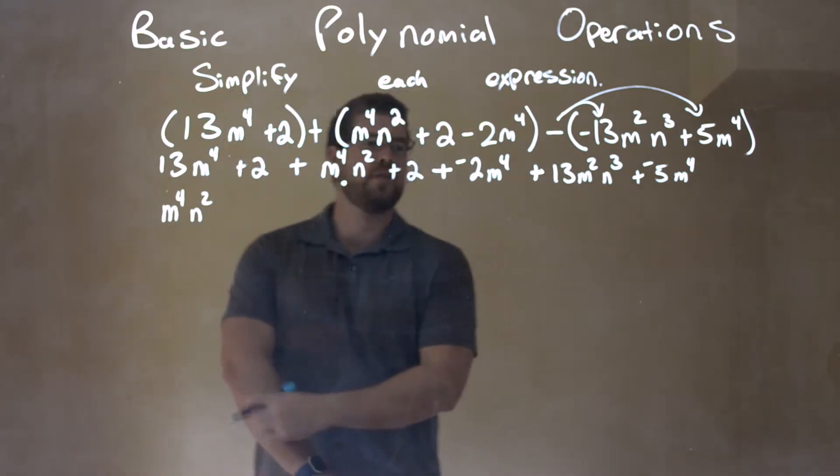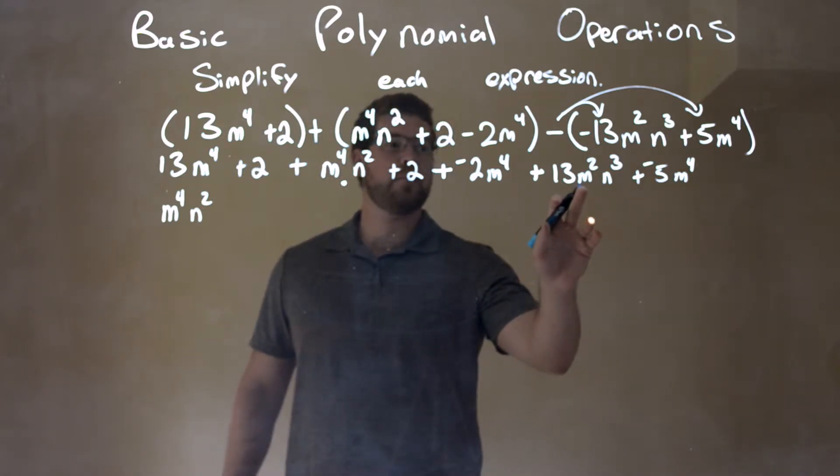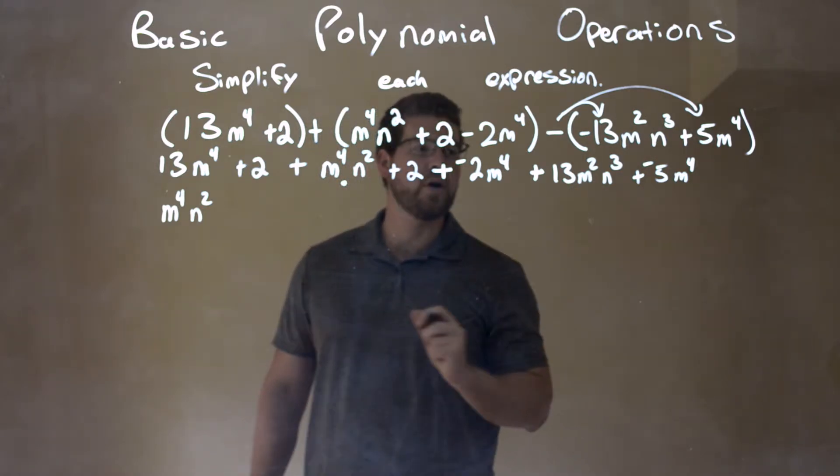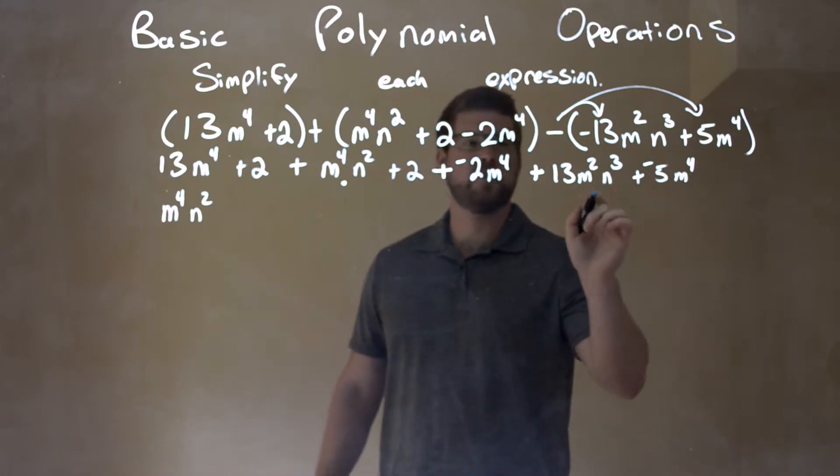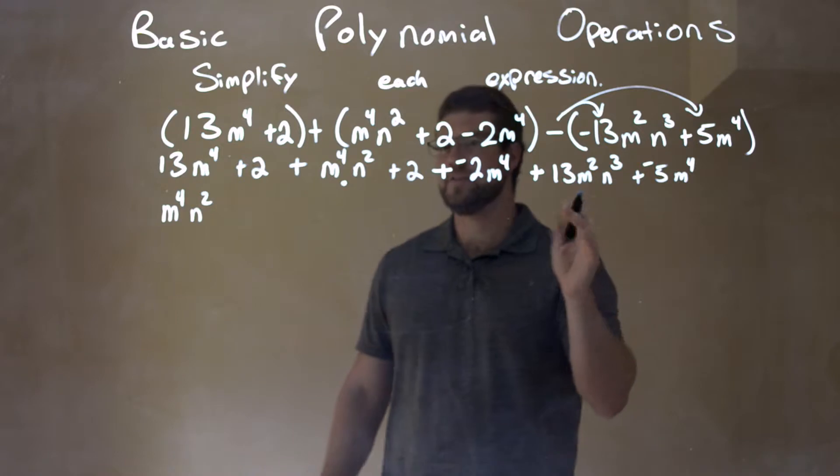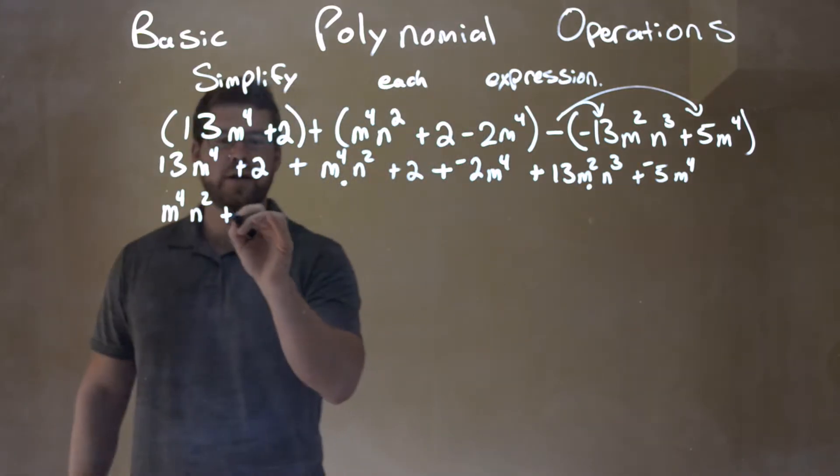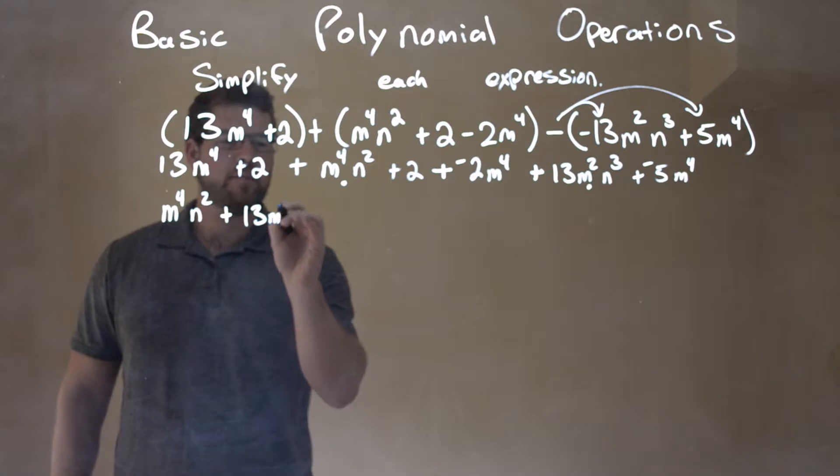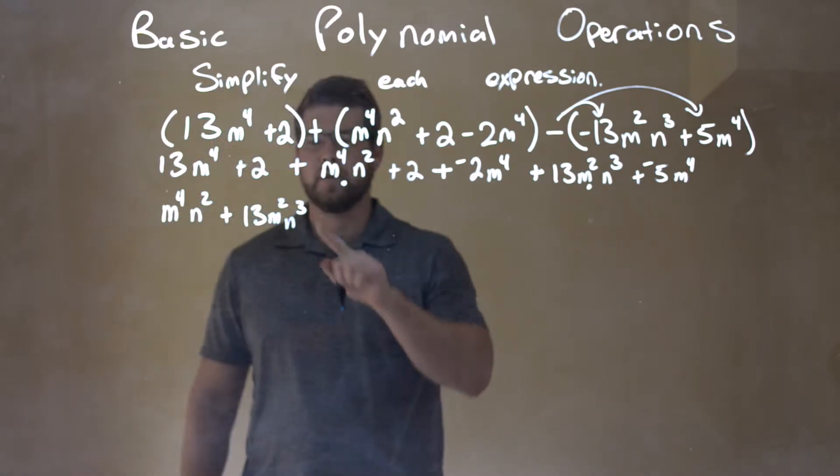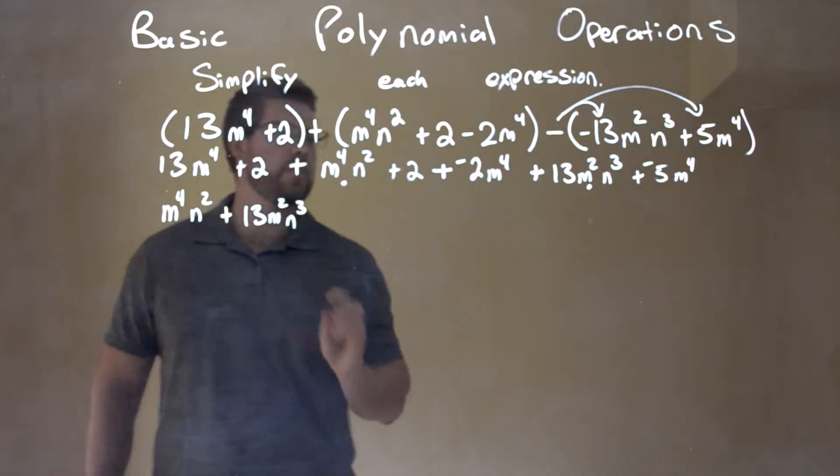The next one is, what's the next things we're going to do? Well, the next combinations that I see are just the m squared n to the third. I see that combination. I don't see anything else here that has this combination, this like-term in a sense. So I'm going to mark it. I'm going to put it right here. I have 13m squared n to the third.